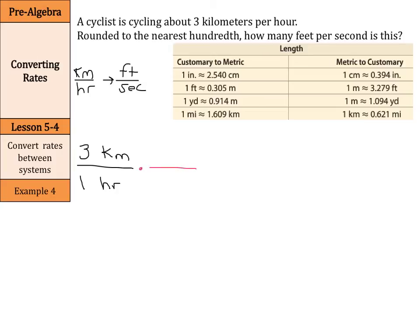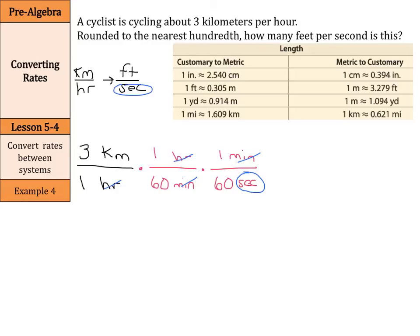We need to cancel out our hours — it's on the bottom now, so we need to write it on top for this conversion. We know 1 hour is equal to 60 minutes, so our hours cancel out. But we're not into seconds yet, so we need to get our minutes into seconds. Our minutes are on the bottom; we write 1 minute is equal to 60 seconds. That gets our minutes to cancel out, and we're now in the unit we want: seconds.